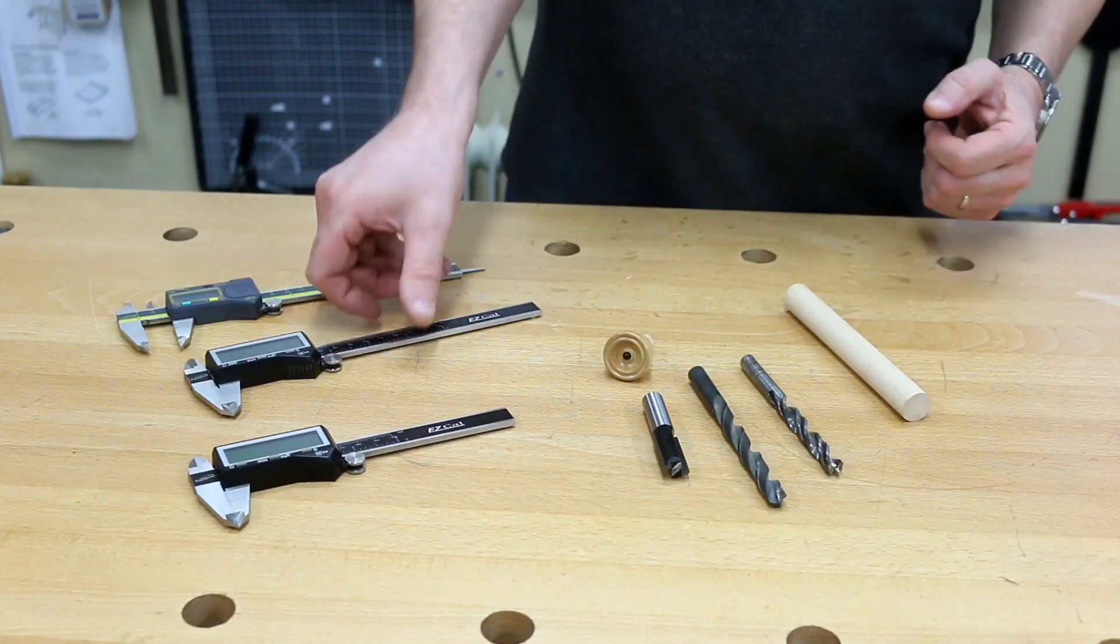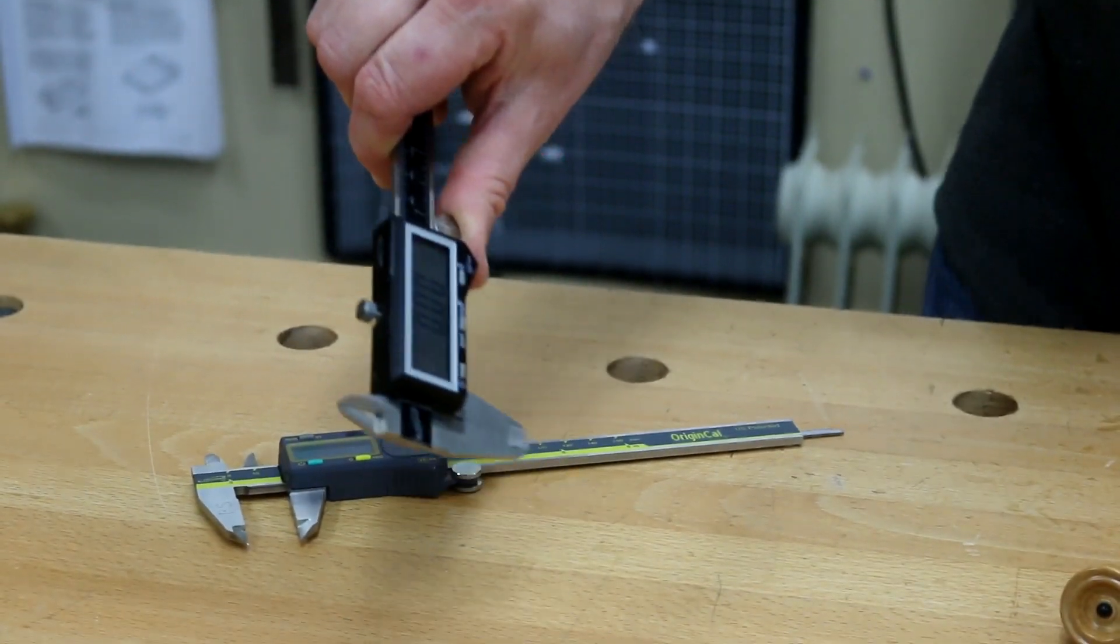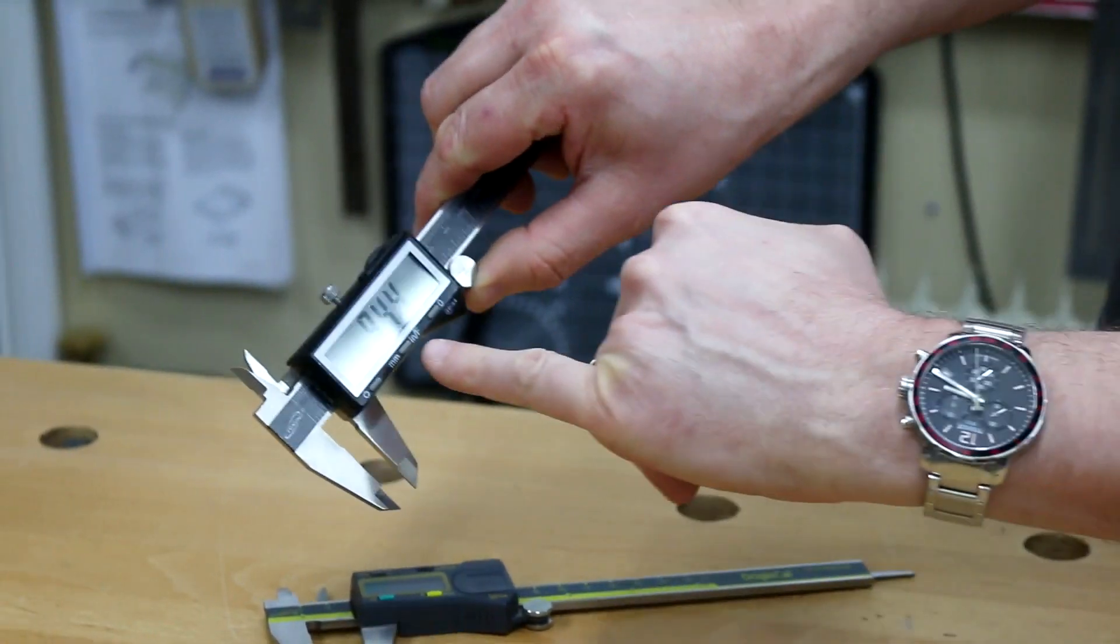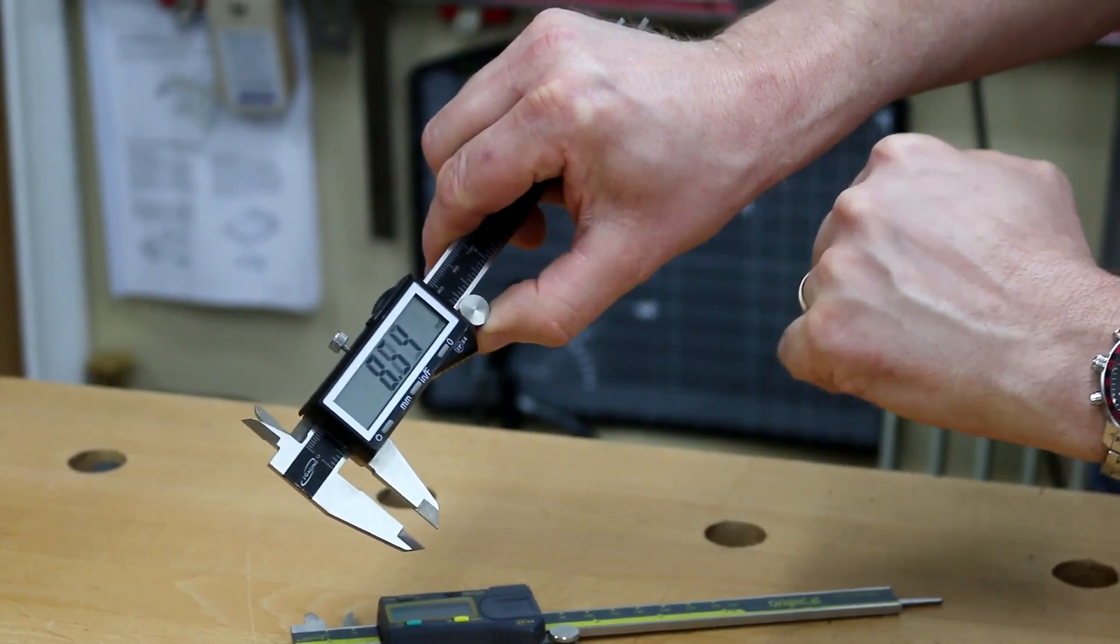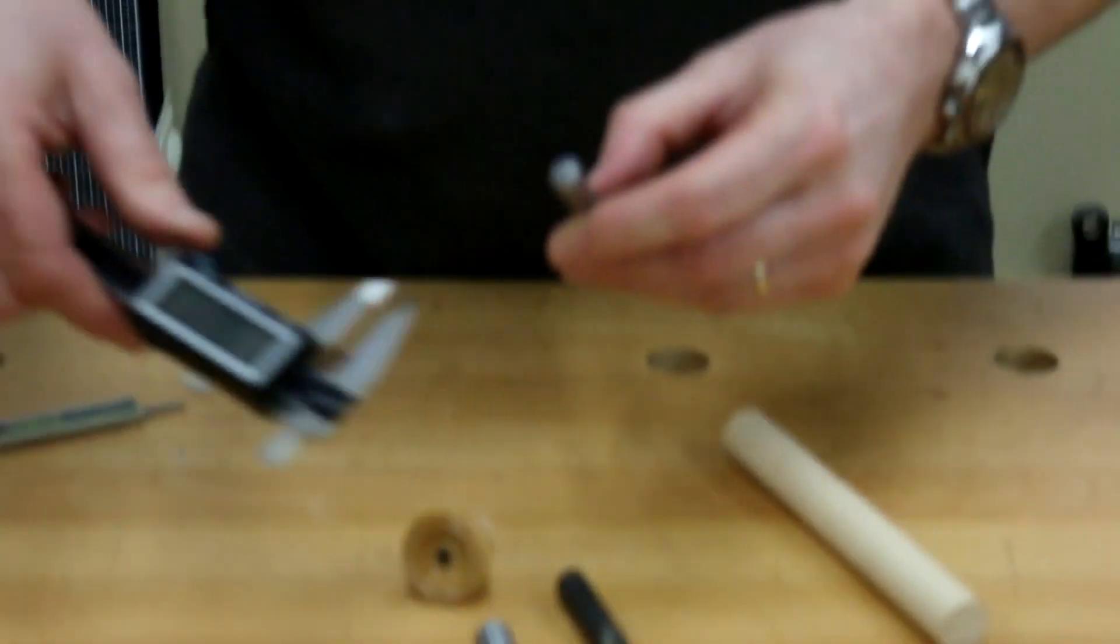The 150 mil caliper is my favorite size for most of the work that I do. One thing I like about these is the size of the numbers on here: 14 mil high, really easy to read.